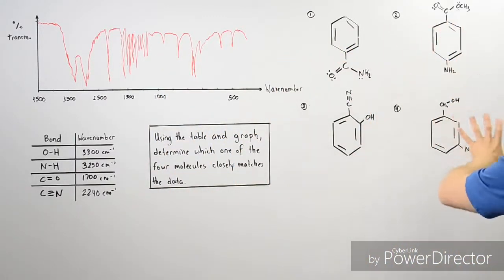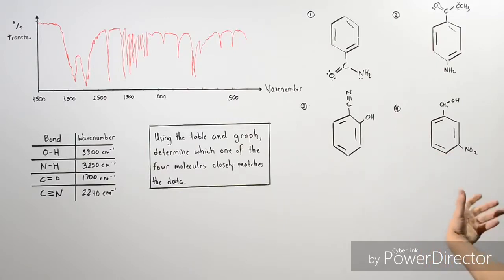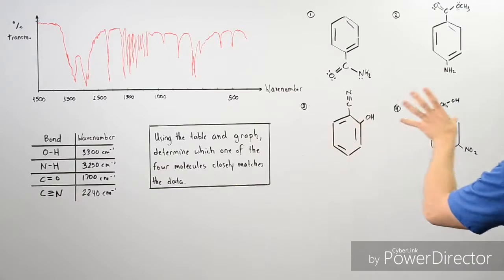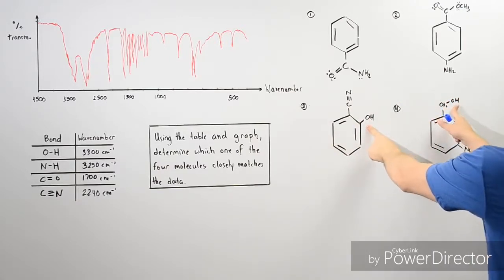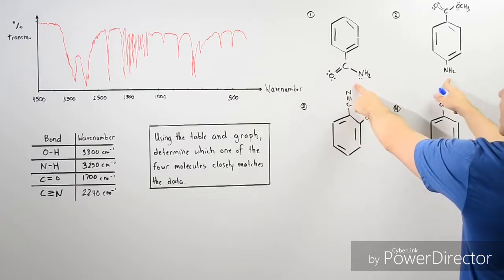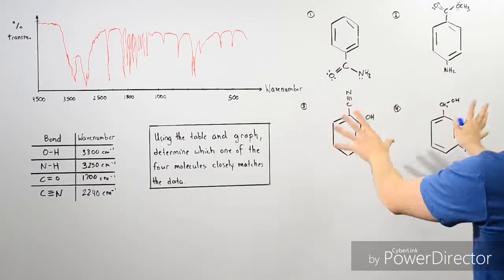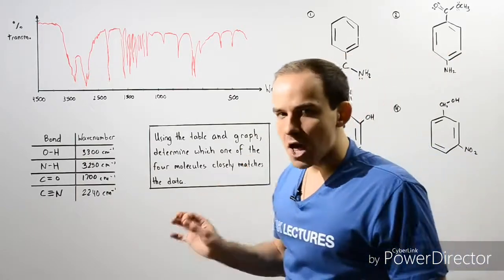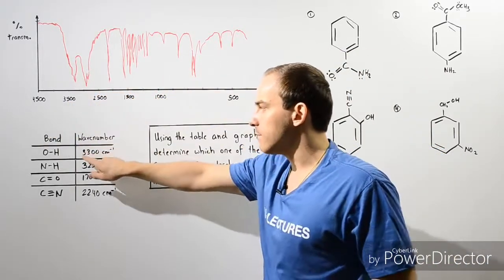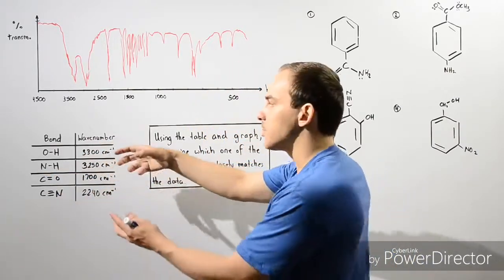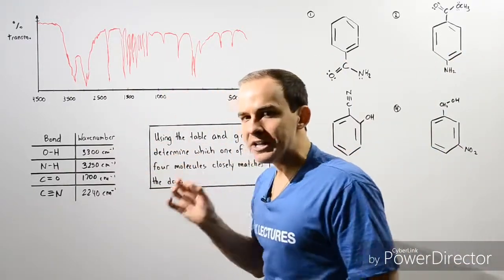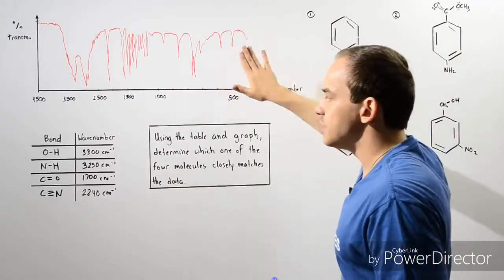Let's look at these four molecules and describe the different types of chemical bonds. Starting with the OH bond: molecules 3 and 4 have the OH bond, while molecules 1 and 2 do not. Molecules 1 and 2 have the NH bond instead. The wave number for OH and NH are very close to one another — OH has a wave number of about 3300 and NH is very close to that.